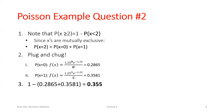We can't forget: we then subtract from one because that's how we set this up using the complement rule. Any questions? It's similar principles to what we did with the binomial — we're just using a different probability mass function. It's actually a little bit easier than using the binomial.